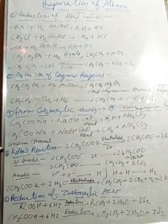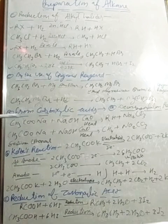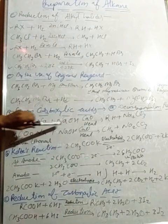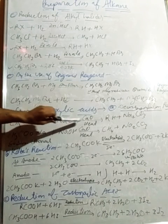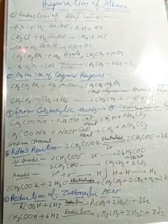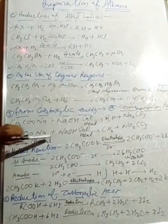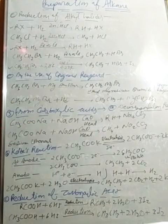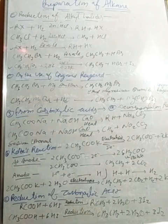Here, sodium ethanoate plus sodium hydroxide, catalyzed by calcium oxide on heating, forms alkane — ethane — plus sodium carbonate.